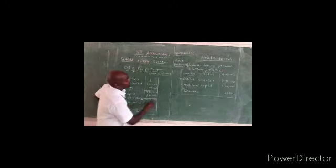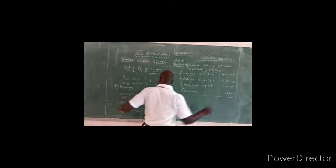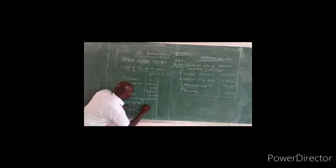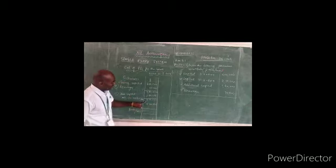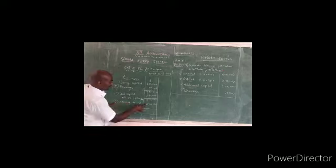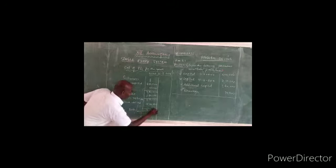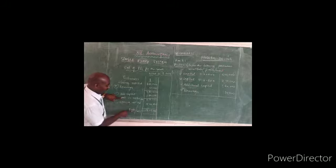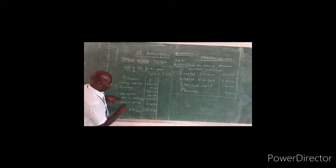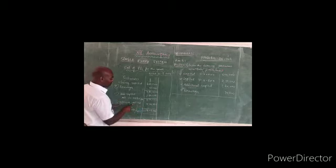Now less opening capital. Opening capital is 5,50,000 rupees. So 8,50,000 minus 5,50,000 equals 3,50,000. To determine profit: adjusted closing capital 8,50,000 is more than opening capital 5,50,000, so the answer is profit. In the opposite case, if adjusted closing capital is less than opening capital, the answer will be loss. In this question, the answer is profit of 3,50,000. Thank you, friends.